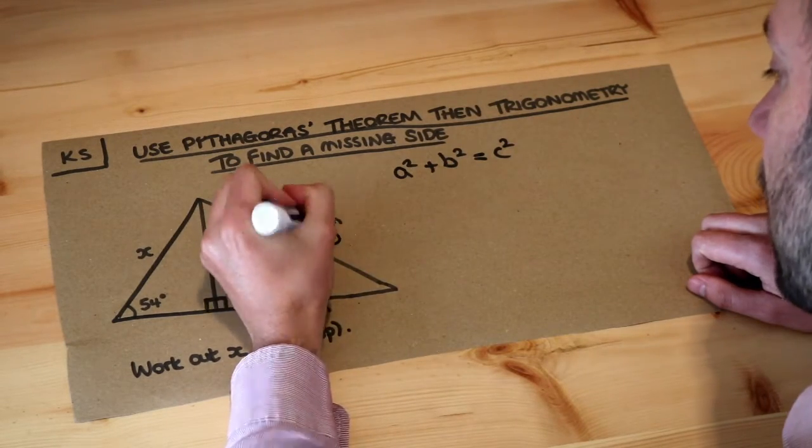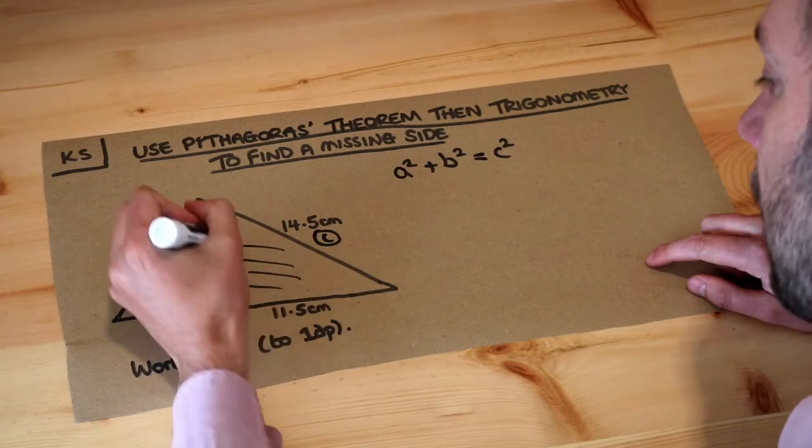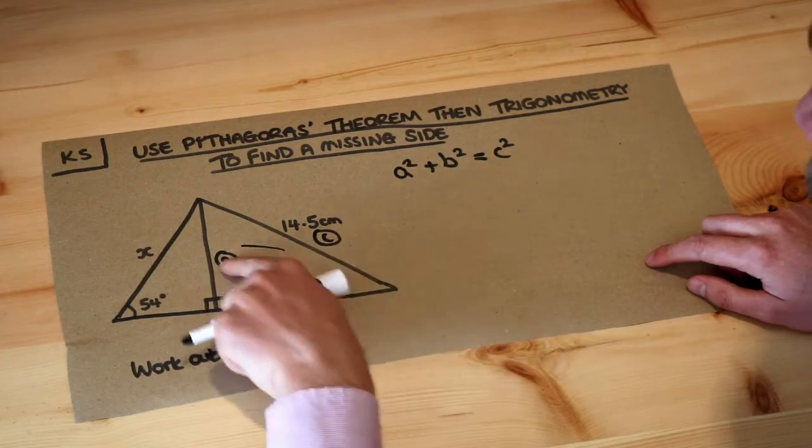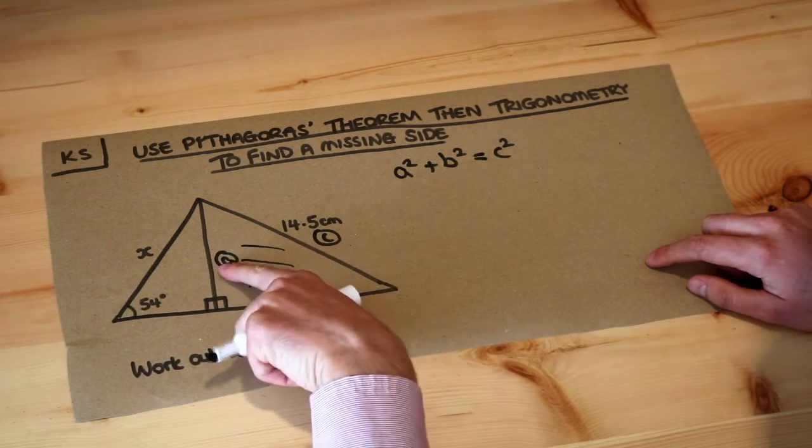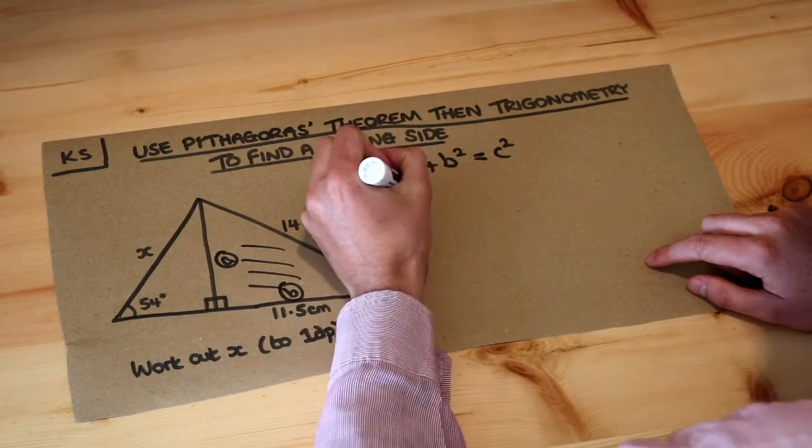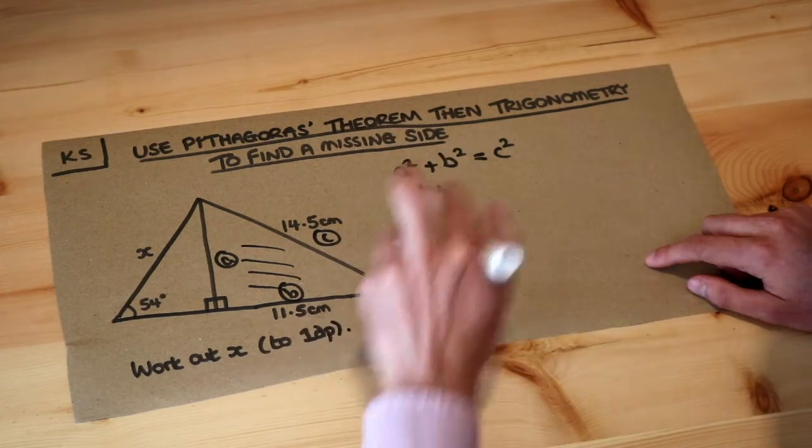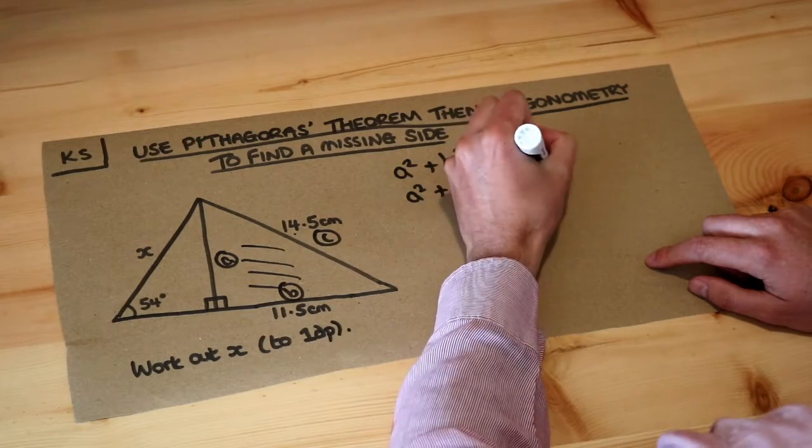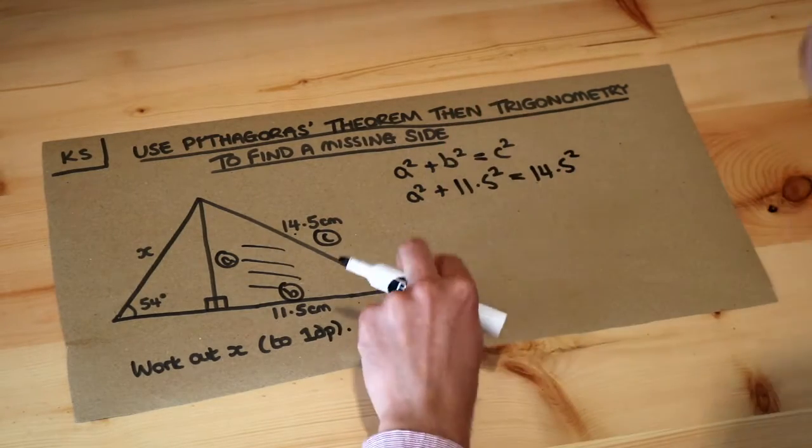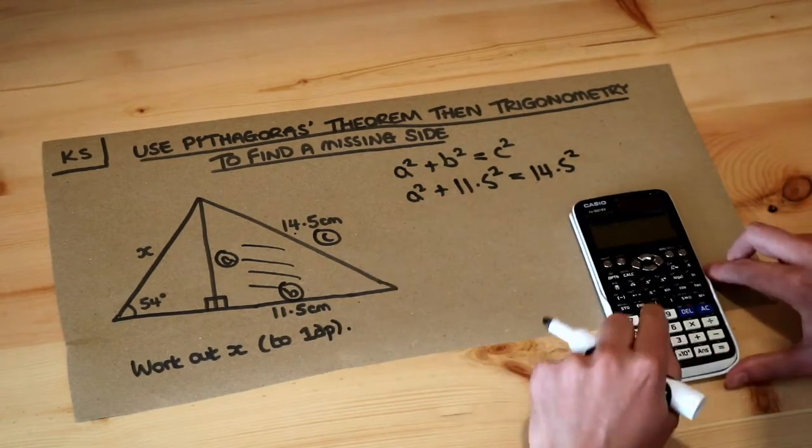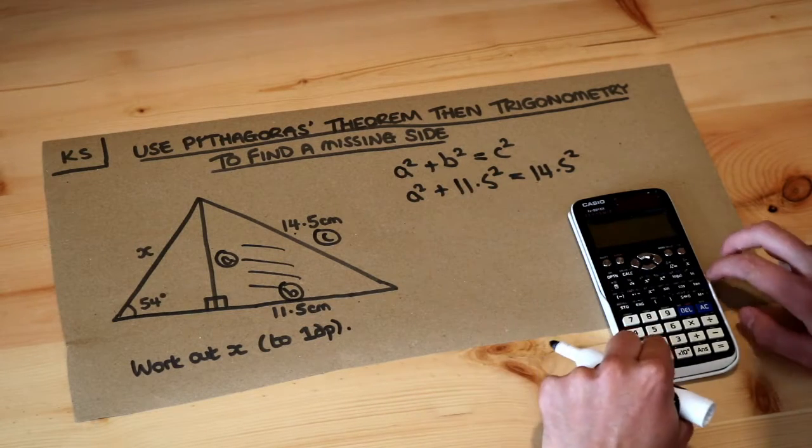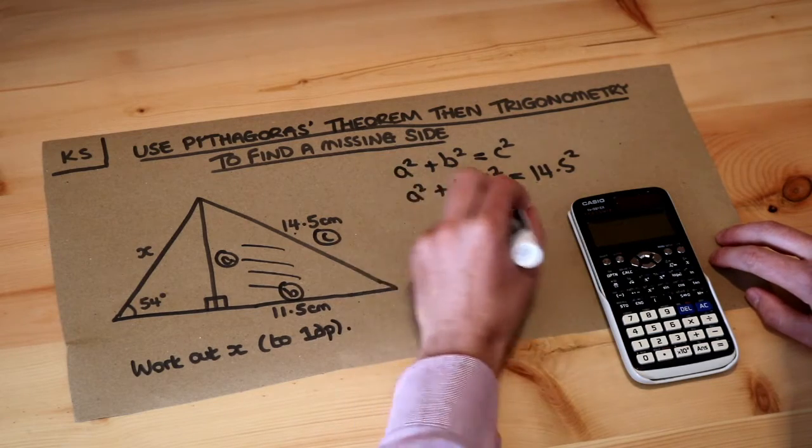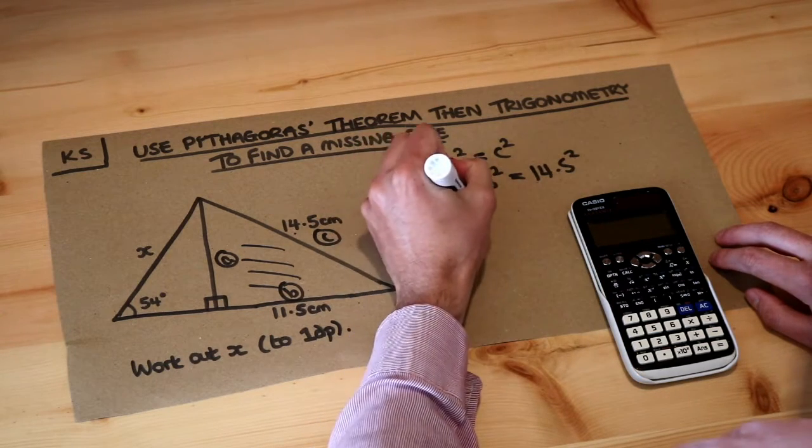So if this is the hypotenuse c and then we make the other two lengths a and b, then if we substitute these lengths in we get a² + 11.5² = 14.5². I'm just going to do this quickly because we've explored this in a previous video. I can do 14.5² - 11.5² which is 78, and then if a² is 78, a is the square root of 78.